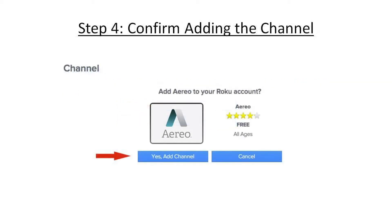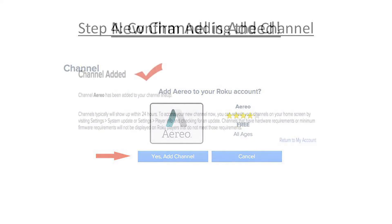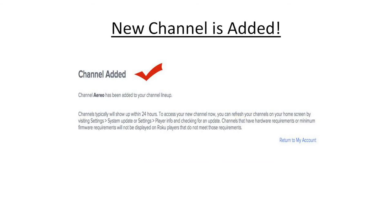Next, you'll get a page asking you to confirm your new channel. Click on the Yes Add Channel button. You should now see a screen telling you that the channel has been added to your Roku device.